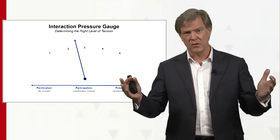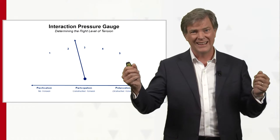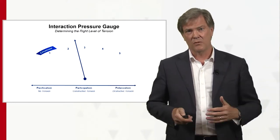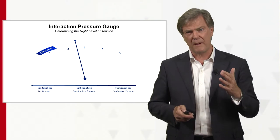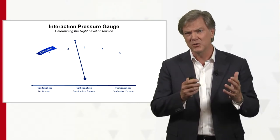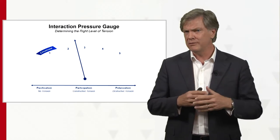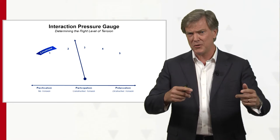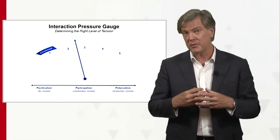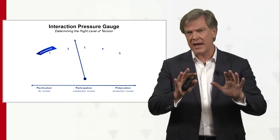Along this continuum, as I explained with pacification and polarization, those are probably the two extremes that you'd like to stay out of. At the extreme of pacification — passive blue — we call that circumvent. In the conversation, you don't really want to address the issue; you want to skirt around it. That's circumvention: don't bring it up.